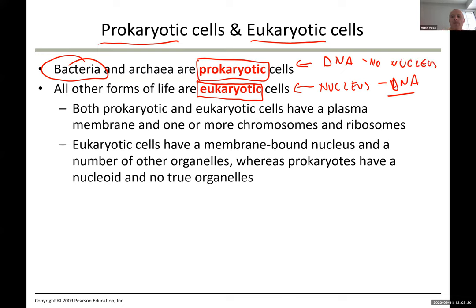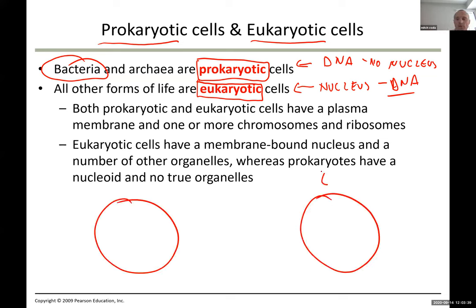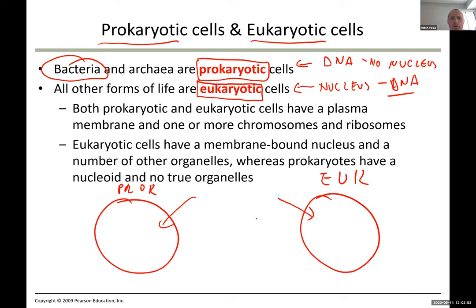For prokaryotic cells there is no nucleus and no enclosed membrane where DNA is stored. Features common to both cell types include the plasma membrane and the cytoplasm — a jelly-like fluid inside.